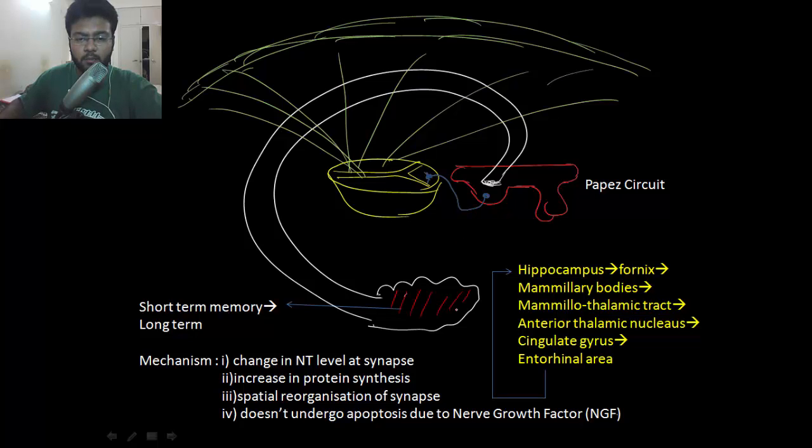First is hippocampus. Hippocampus is connected to the fornix, and fornix turns around the thalamus and ends in the mammillary body. From the mammillary body arises the mammillothalamic tract which ends in the anterior nucleus of thalamus, and from there arise radiations which go to the cingulate gyrus above the corpus callosum, and from there it goes to the entorhinal area and back to hippocampus.